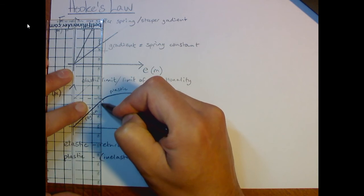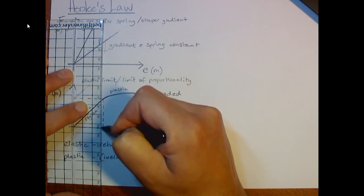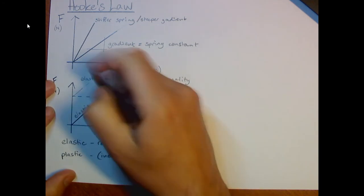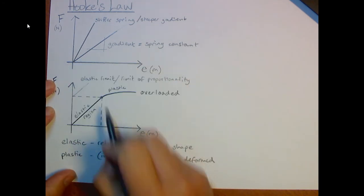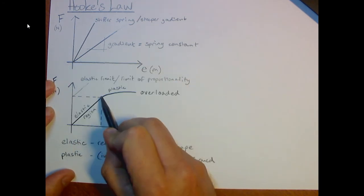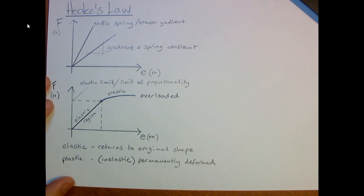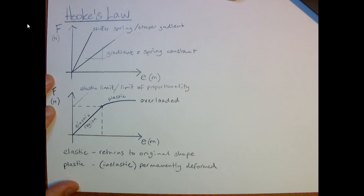So elastic limit can be given as a force or it can be given as an extension as well. So if we needed to measure it as an extension, give it as an extension, we would read it off of the extension axis. But this is the point on the graph which it stops being a straight line.